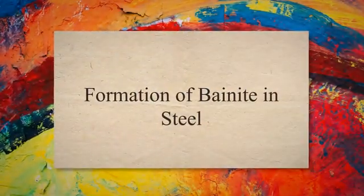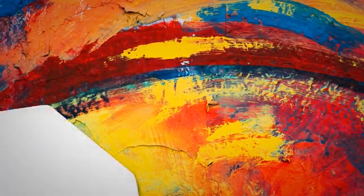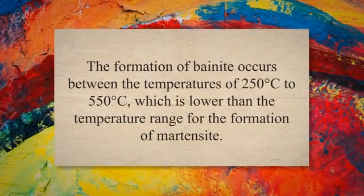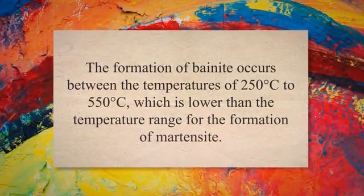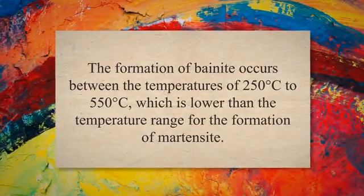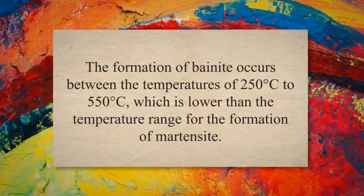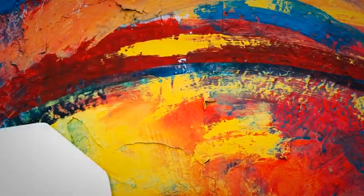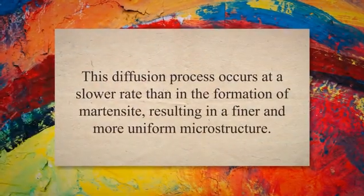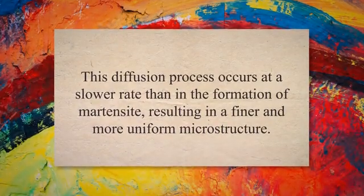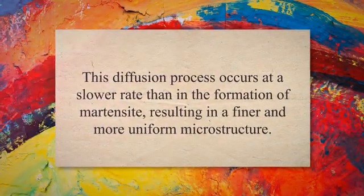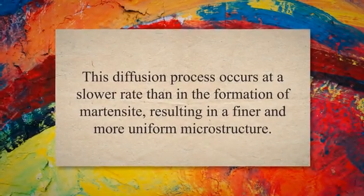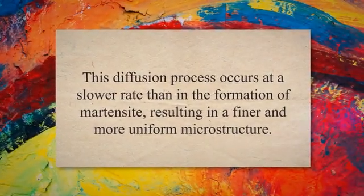Formation of bainite in steel. Bainite is a microstructure that forms in steel when it is cooled from the austenitic phase at a moderate rate. The formation of bainite occurs between the temperatures of 250 degrees Celsius to 550 degrees Celsius, which is lower than the temperature range for the formation of martensite. The process of bainite formation involves the diffusion of carbon atoms from the supersaturated austenite into the ferrite and cementite phases. This diffusion process occurs at a slower rate than in the formation of martensite, resulting in a finer and more uniform microstructure.